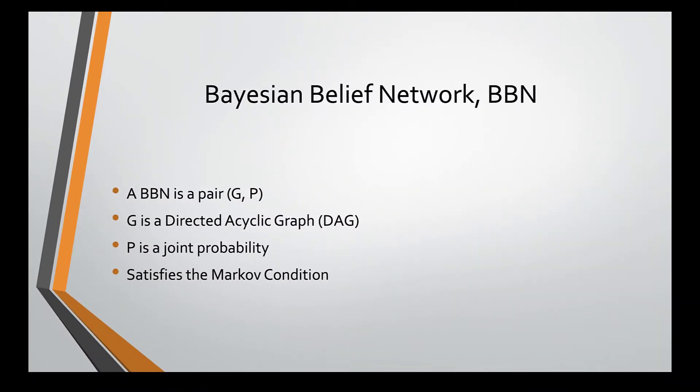A Bayesian belief network is defined as a pair G and P, where G is a directed acyclic graph, P is a joint probability distribution, and the pair G and P satisfy the Markov condition. As you can see, there are many moving parts to a Bayesian belief network. However, it's not terribly difficult to understand each of these component parts and to bring them together to understand the whole. Bayesian belief networks are sometimes just called Bayesian networks. I'll use the two terms interchangeably.